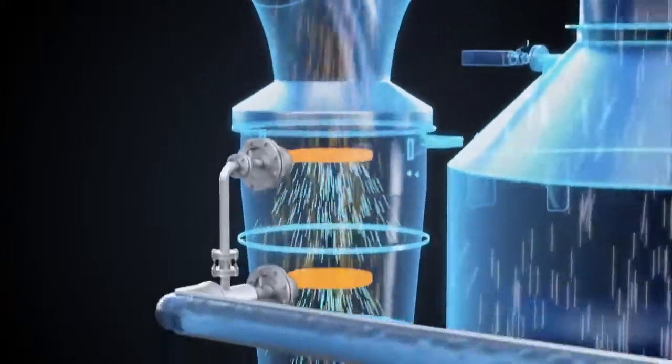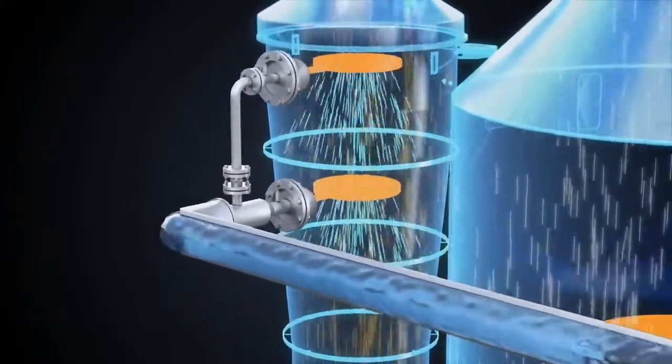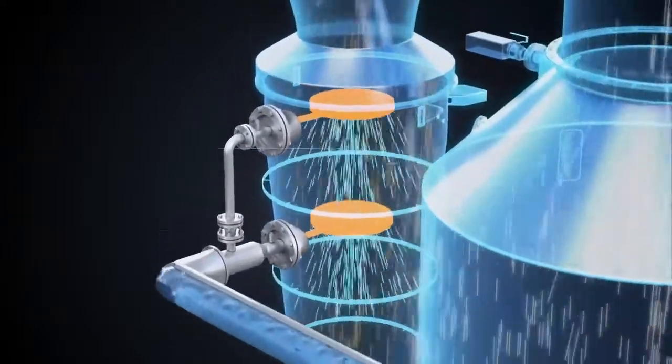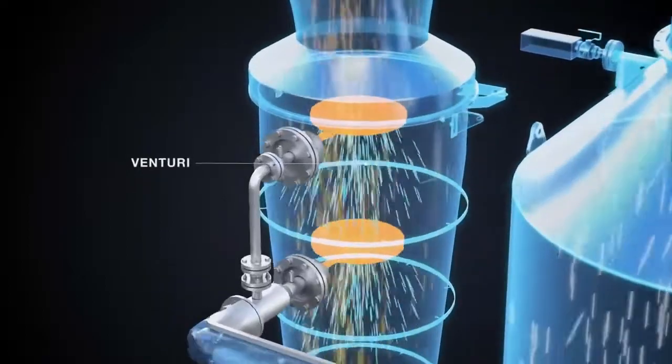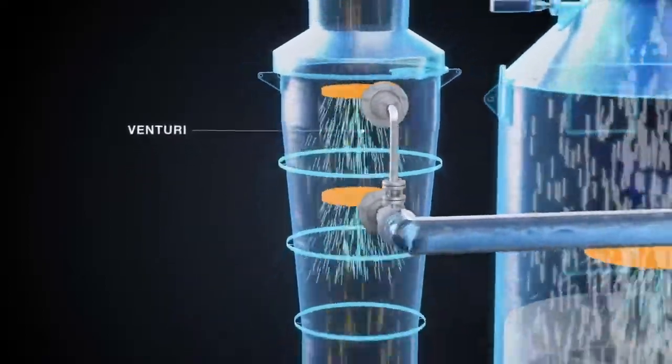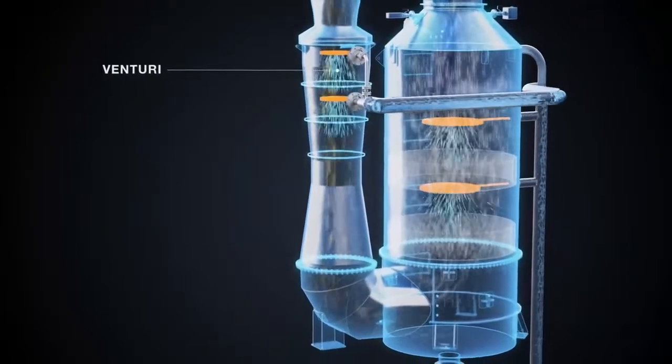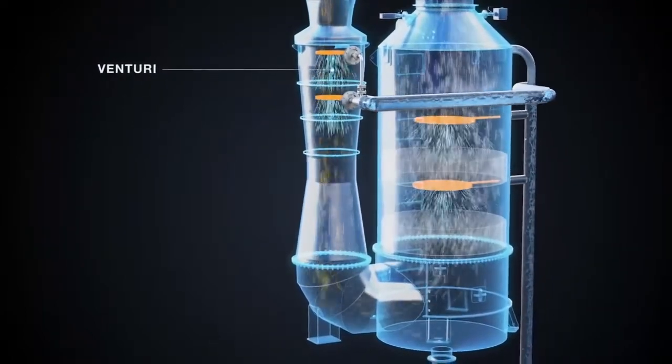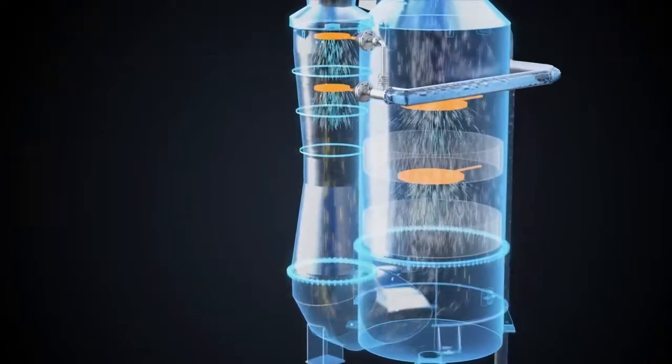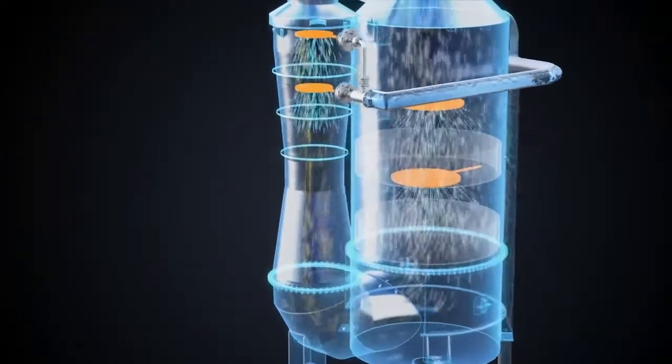While scrubbing with a conventional exhaust gas cleaning system, the exhaust is first led to the Venturi, where the first spray of scrubbing water is introduced. The shape of the Venturi body promotes the desired high-turbulent mix of hot exhaust gas and seawater. Already at this stage, there is a reduction in the exhaust gas temperature, sulfur oxides, and particulate matter.